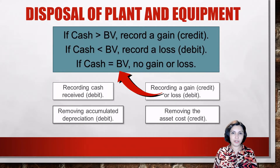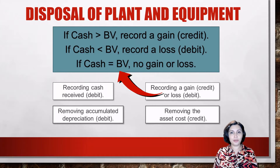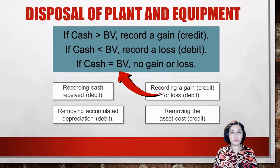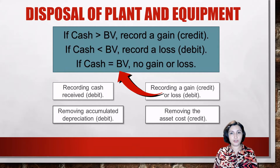If the amount of cash received is greater than the book value of the asset, a gain is associated with the disposal. Remember that book value is equal to the asset's cost less accumulated depreciation. If the cash received is less than the book value of the asset, a loss will be recorded. When the amount of cash is exactly equal to the book value of the asset, there will be no gain or loss in connection with the disposal.